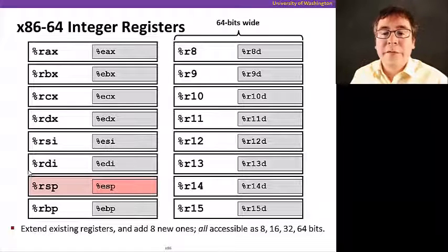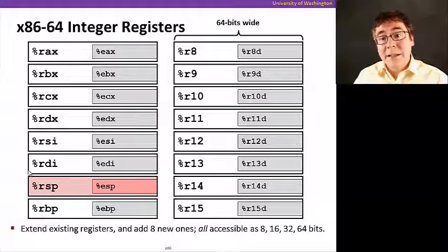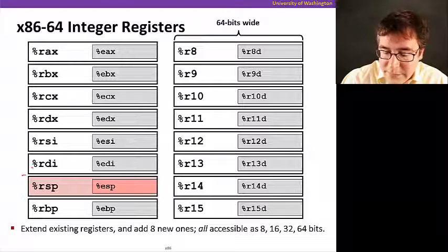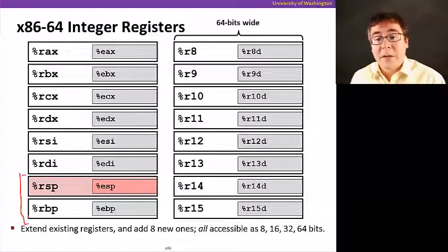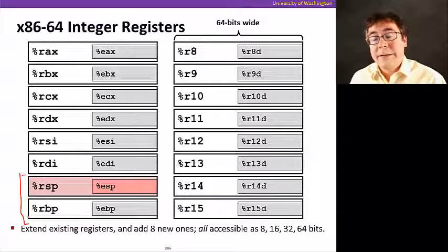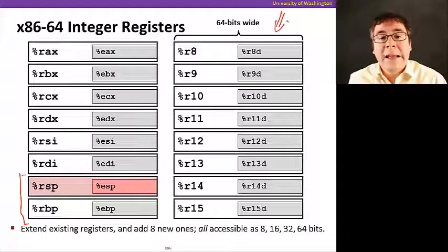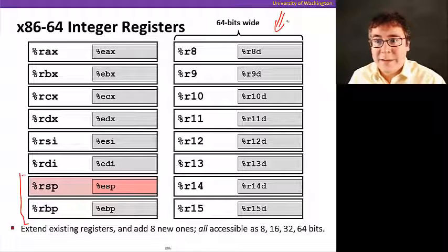x86-64 has 16 registers. And just like IA32, there's some registers that have special use, but there's a lot more general purpose registers, like all of these registers here are only present in the 64-bit version of x86.